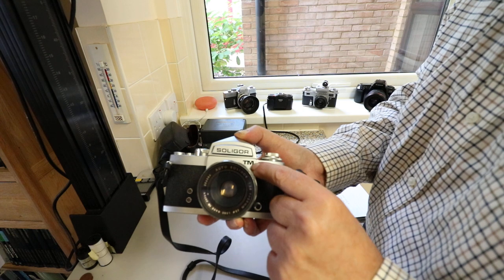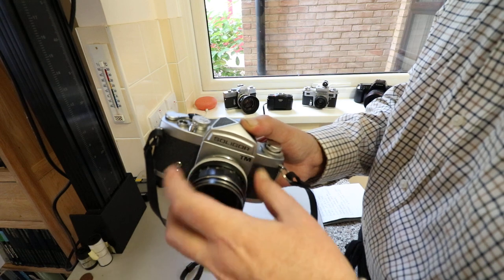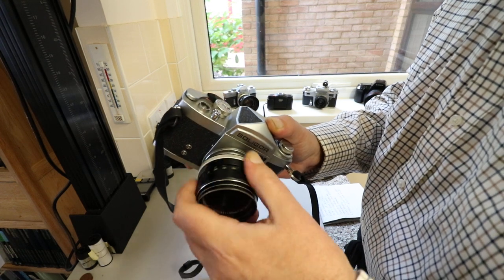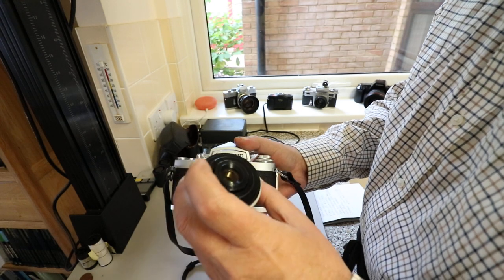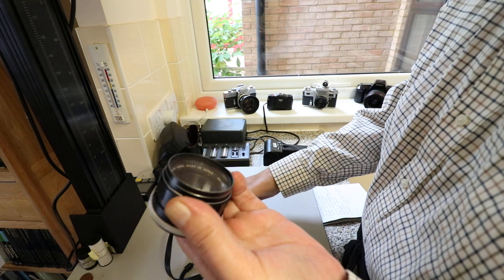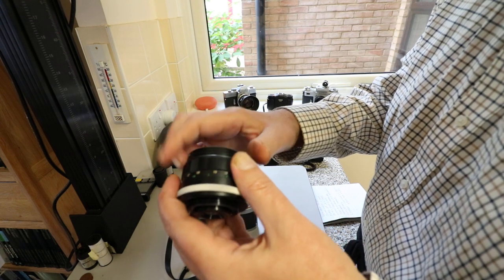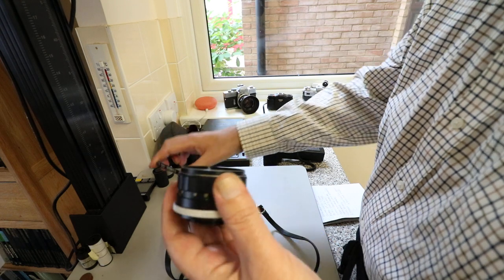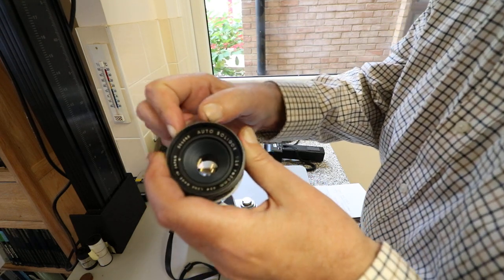The TM stands for thread mount because this is an M42 threaded camera on the lens mount. As you can see, it has what's called the automatic diaphragm. When you see auto on a lens, it doesn't mean automatic exposure or autofocus.